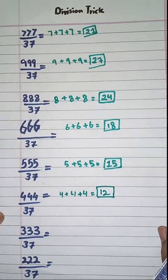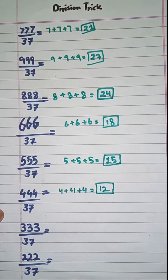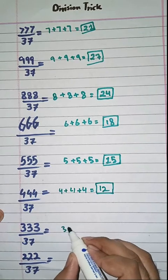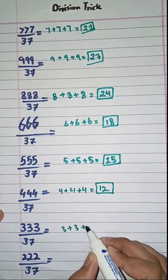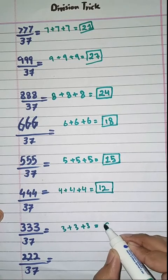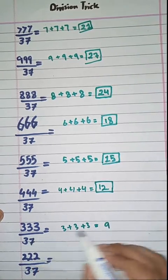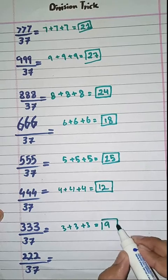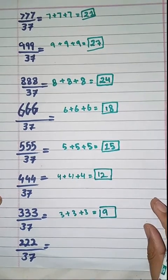Next one: we have to divide 333 by 37. Simply we have to add the digits of this number: 3 plus 3 plus 3, which is equal to 9. So 333 divided by 37 is equal to 9.